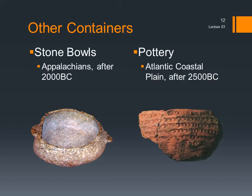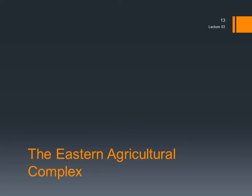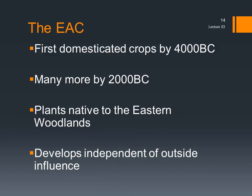This revolution in subsistence technology drove the population growth of the Late Archaic. And what foods were being processed in those containers? After about 4000 BC, they were increasingly farmed crops. The Eastern Agricultural Complex, a set of native North American domesticated crops, developed in the Middle Archaic and remained the core farmed crops for thousands of years. This transition from a strictly hunting and gathering subsistence strategy to one mixing wild and cultivated foods is a major watershed event in North American prehistory, and it warrants a closer look at the cultural process that would lead people to make the shift.